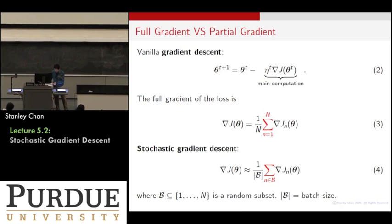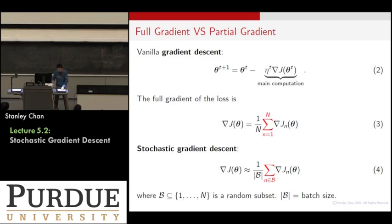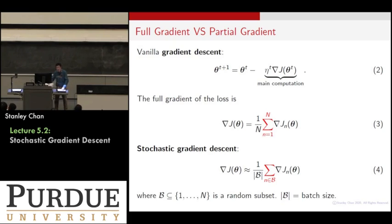When you look at the gradient descent algorithm, you notice that it updates theta as: theta(t+1) = theta(t) minus the step size times the gradient of your loss function. The loss function j(theta) is one over N, summed from n=1 to N, of j_n(theta), where j_n is the nth loss term. When you take the gradient of j(theta), since the gradient commutes with the summation, you get one over N times the sum of the gradients of j_n. To evaluate this gradient you sum up all the individual gradient terms.